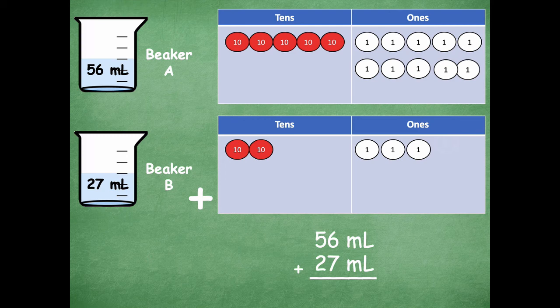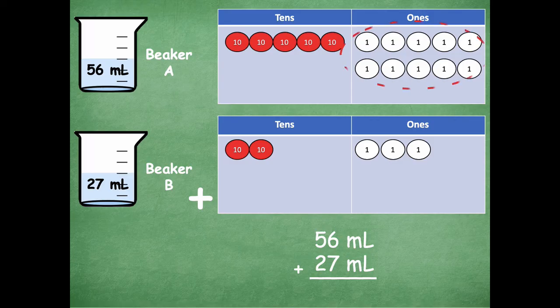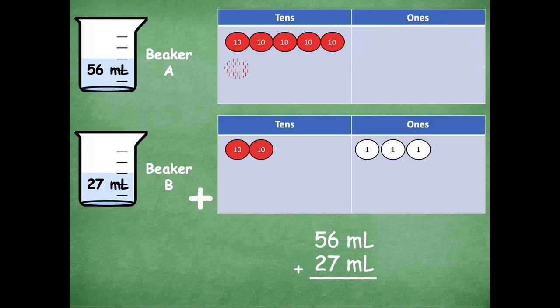I can trade in 10 of those ones for a 10 to help me solve this problem a little bit easier. Also we can rename 13 ones as one 10 three ones. So I could take all of these and trade them in for a 10. Let's model how we would do that with our standard algorithm. So we have six ones plus seven ones which we know was 13 ones and we traded in a 10. So there's the 10 that I traded in for and there's my three ones that I have left over.